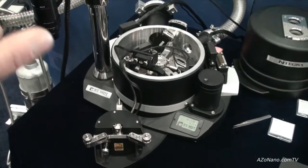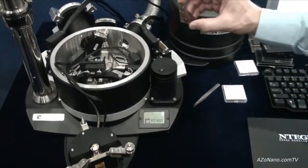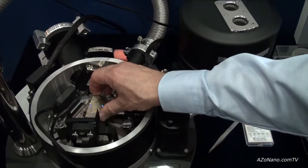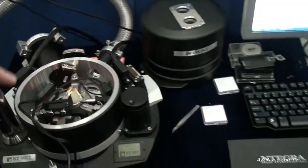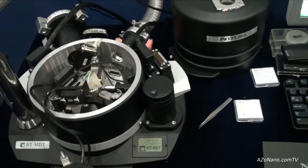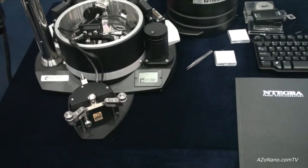So we load the sample this way. Yuri will help us to show this. It has magnetic and mechanical holders depending on the sample size. You see this one is pretty big. Then we install the measuring head from the top.